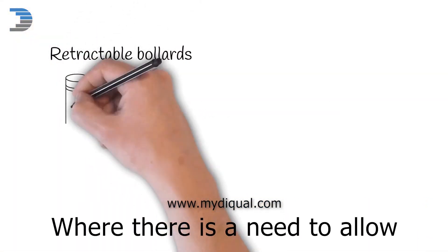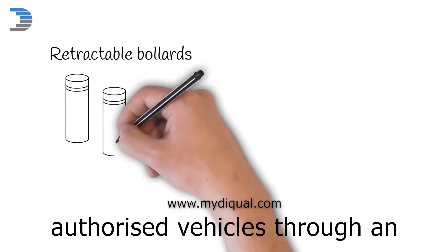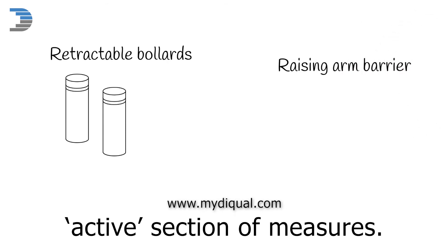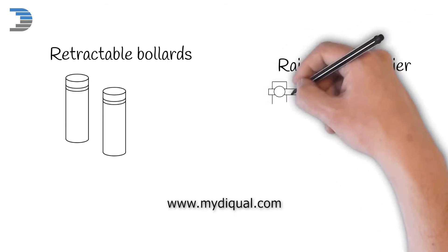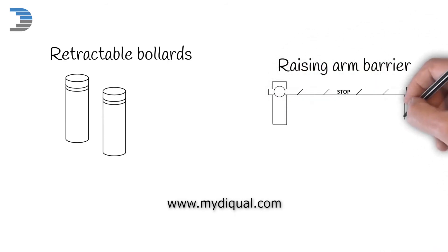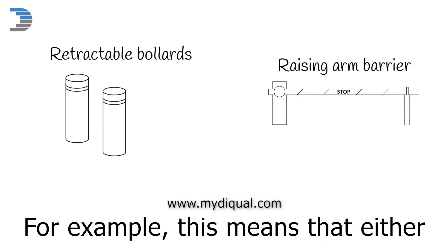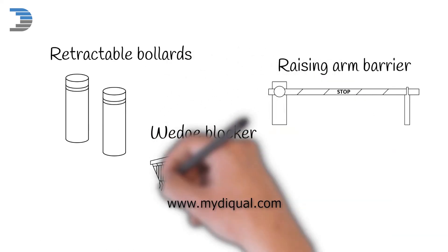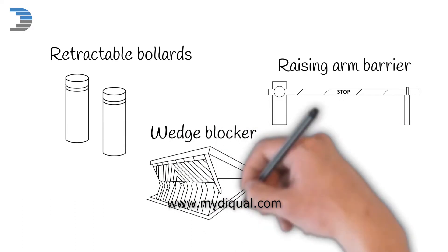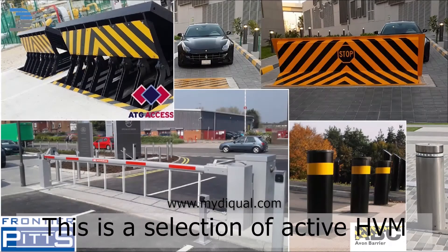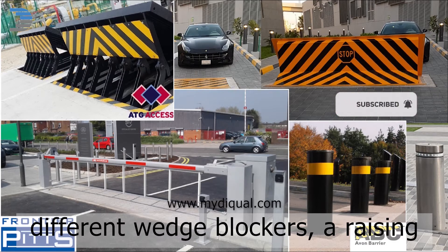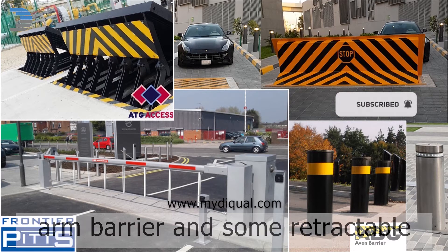Where there is a need to allow authorized vehicles through an HVM line, it is necessary to have an active section of measures. For example, this means that either a barrier will open, or bollards will lower into the ground. This is a selection of active HVM measures. You can see two different wedge blockers, a raising arm barrier, and some retractable bollards.